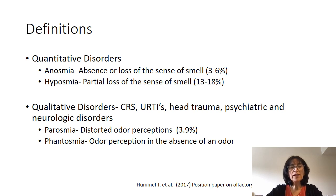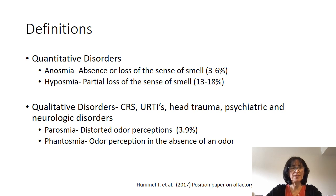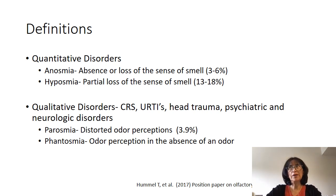We also have qualitative disorders, which are often associated with neurologic disorders but can also be part of chronic rhinosinusitis, post-viral infections, head trauma, et cetera. We divide these into parosmia, which is a distorted odor perception — for example, smelling a bouquet of roses and it smells like a poopy diaper — and phantosmia, which is where there's nothing there to smell, but yet you're perceiving the smell of something.